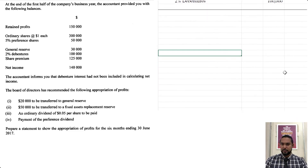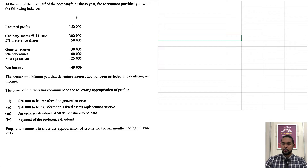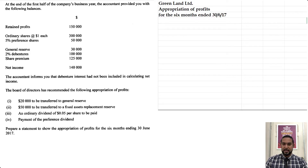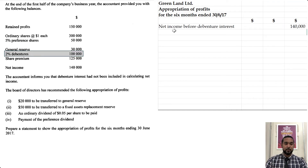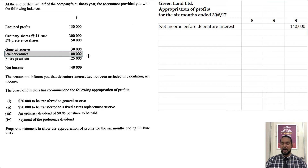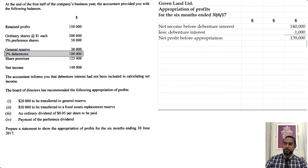Let's do a side-by-side split. We'll head up: Greenland Limited — Appropriation of Profits Account for the six months ending 30 June 2017. Starting with net income of $140,000, we need to adjust for debenture interest. The debenture interest is 2% per annum: 2% of $100,000 = $2,000 for a full year. But this statement is for six months — half a year — so we multiply by a half, giving $1,000. Subtracting gives us profit before appropriation of $139,000.